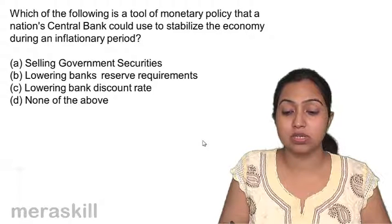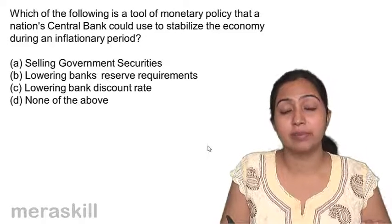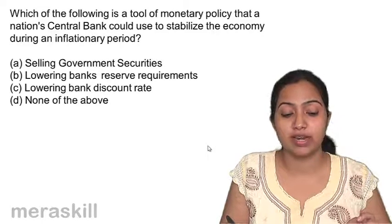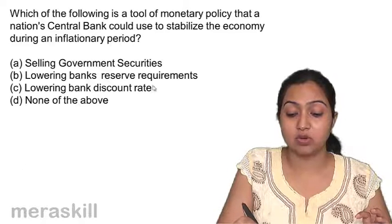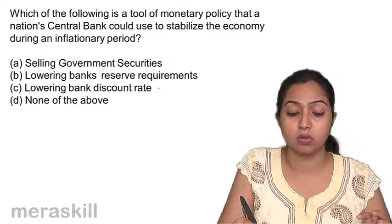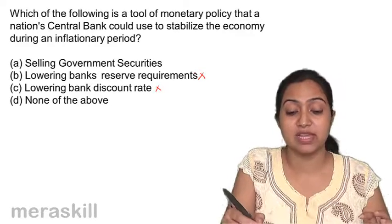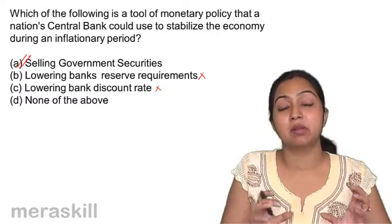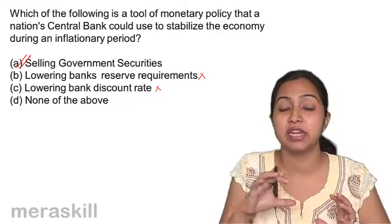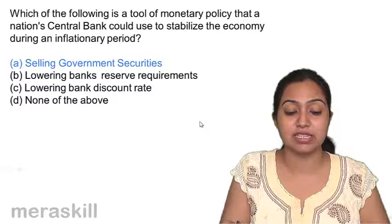Which monetary policy tool could a central bank use to stabilize the economy during an inflationary period? The RBI tries to control credit during inflation. Lowering the bank discount rate or lowering reserve requirements would encourage borrowing — so those are not the answer. Selling government securities is correct: when RBI sells securities and people buy them, money flows to RBI and money in the market is reduced.